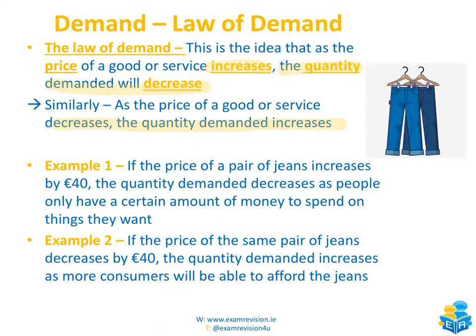We have a couple of examples to show this. In the first example, if the price of a pair of jeans increases by €40, the quantity demanded decreases. This is because people only have a certain amount of money to spend. So if you had a pair of jeans in mind that cost €50 and you walked into the shop and what you expected to cost €50 was actually costing €90, the chances are you would not buy those jeans anymore. You wouldn't be alone in making that decision, and therefore the quantity demanded for those jeans has decreased, because the rational thing for consumers to do is to not want to buy that product anymore.